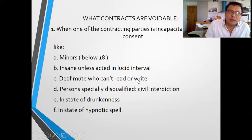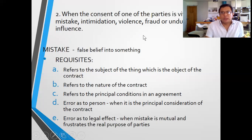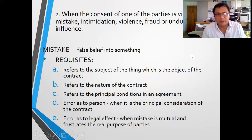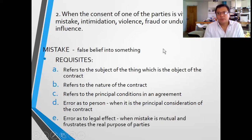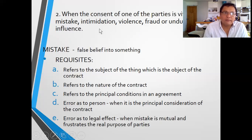So when these persons enter into a contract, the contract is voidable. On the other hand, another kind of voidable contract is when consent is vitiated by mistake, intimidation, violence, fraud, or undue influence. For example, a property owner who is compelled to sell by intimidation, violence, undue influence using authority over the other party, or by mistake — this is another kind of voidable contract.